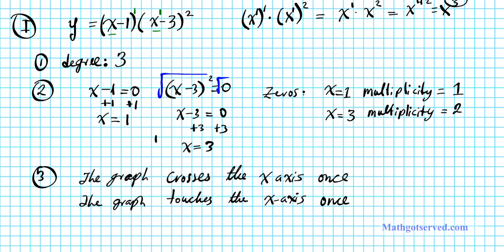For higher multiplicities — 4, 5, 6, 7 — whenever you have an odd multiplicity, the graph crosses. If you have an even multiplicity, the graph touches. So multiplicity 2 is even, meaning it touches at that zero. For x equals 1, the multiplicity is odd, so it crosses at that zero. The rule of thumb: odd multiplicity crosses, even multiplicity touches.